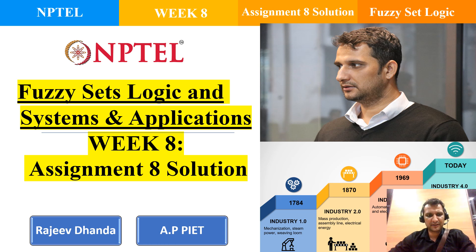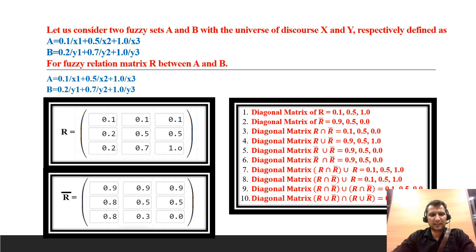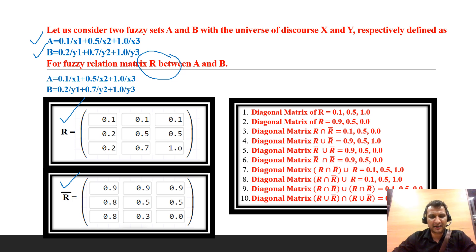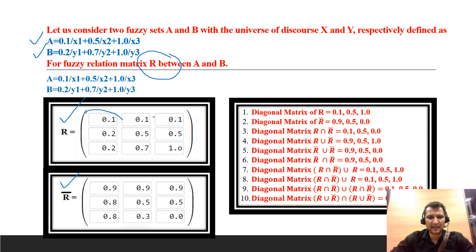Hello everyone, today I will discuss Assignment 8 for the course Fuzzy Set Logic System and Application. In this assignment we are given two fuzzy sets, fuzzy set A and fuzzy set B. First we have to find out the fuzzy relation R between A and B, and after that we take the complement. Questions 1 to 10 are based upon these two matrices, and in these matrices we only care about the diagonal elements — the diagonal elements of fuzzy relation R and the diagonal elements of fuzzy relation R complement.